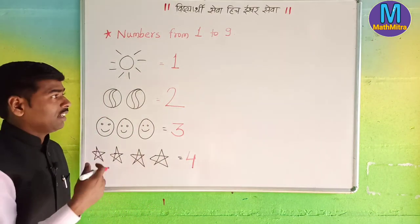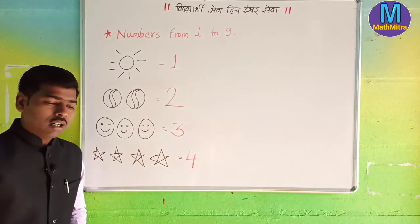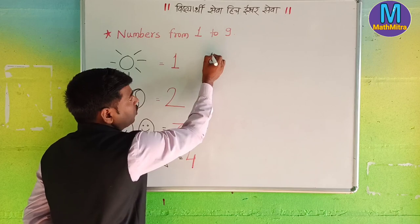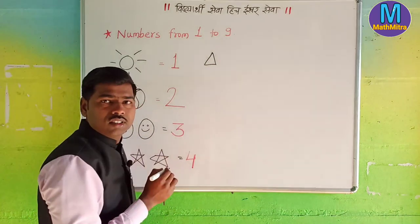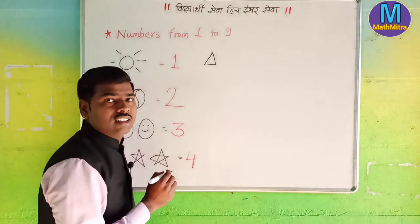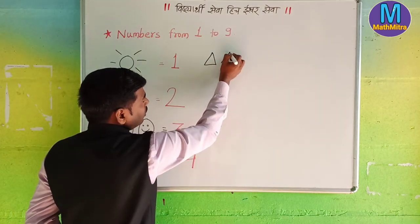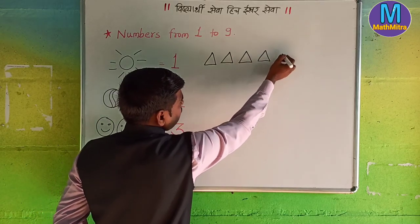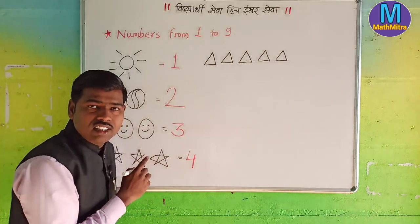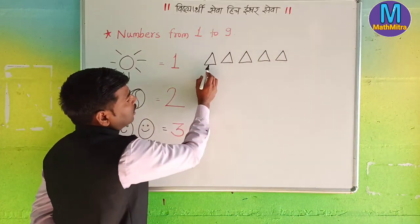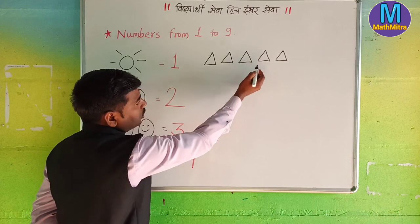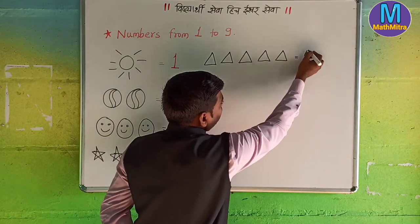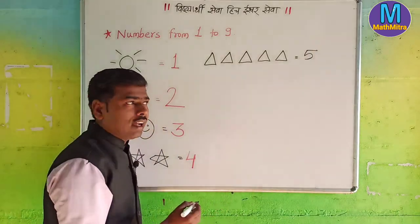Now we are going to take the next number. The next number is here. Do you know what is this? This is a triangle — another one, another one triangle, another one triangle, and this is another one triangle. How many triangles are there? There are one, two, three, four, and five — there are five triangles. How do you write five? We have to write like this — five.